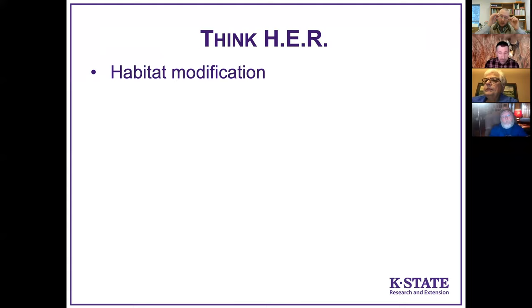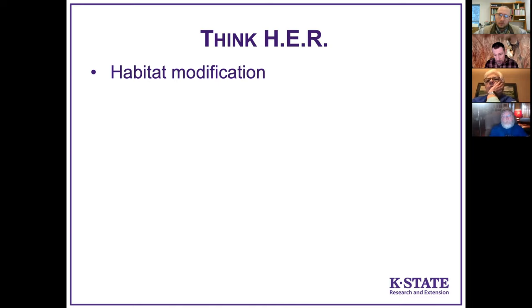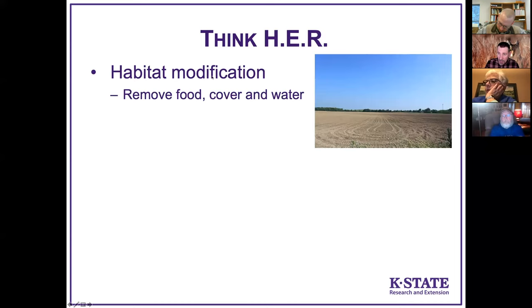There are many, many different methods theoretically and sometimes practically used for dealing with wildlife damage, but many aren't practical at the scale most homeowners or even production farmers might use. For practical wildlife damage management, remember this acronym: HER. It'll be in the upper left corner of almost every slide. H stands for habitat modification — if we don't want a critter damaging our tomato plants, we can sometimes modify the habitat so that species won't want to be there.